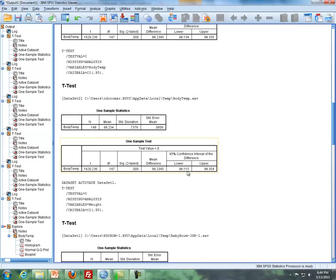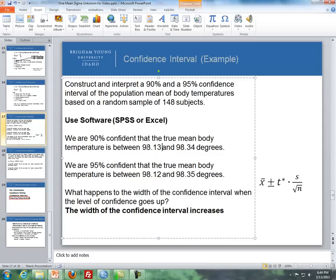And this down here is our 95% confidence interval. So what do those confidence intervals mean? Well, what that means is that in this case, this first example, we are 90% confident that the true mean body temperature is between 98.13 and 98.34 degrees. We are also, but with the second example, when we're doing it with 95% confidence, we're 95% confident that the true mean body temperature is between 98.12 and 98.35 degrees. What happens to the width of the confidence interval when the level of confidence goes up? Well, as you see here, the width slightly increases when we go to 90 to 95. That's because this critical value here goes up when we increase our level of confidence.